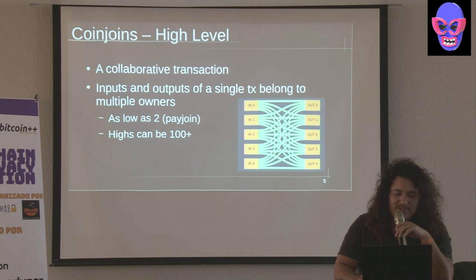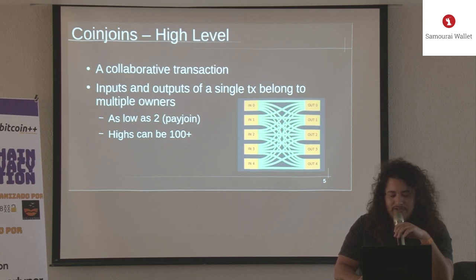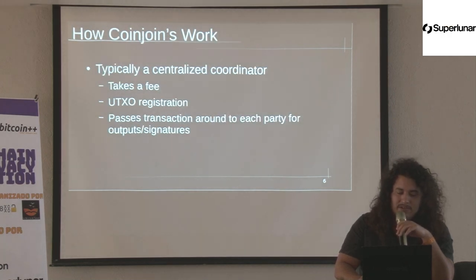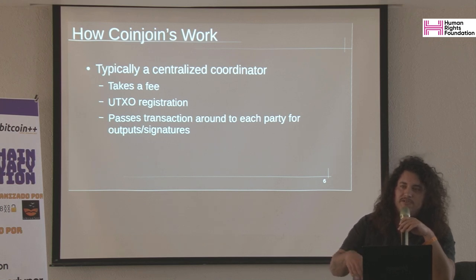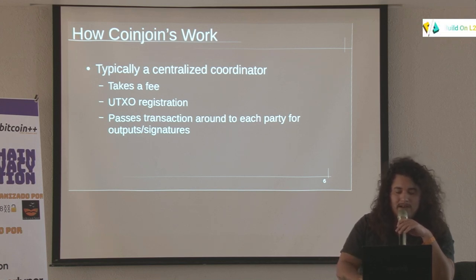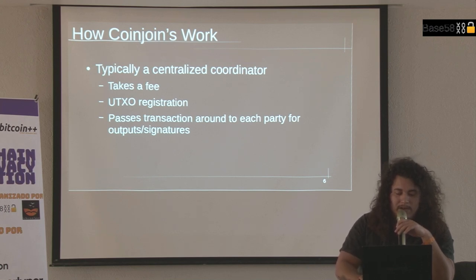It's essentially a collaborative transaction. Ben explained a lot of this in his talk. Many inputs, many outputs — it could be as low as two in a pay join, or as high as hundreds. Wasabi has pushed the limits on collaborative transactions. Typically there's a centralized coordinator involved and they take a fee. There's a UTXO registration phase, and then a transaction phase where everyone's signing and adding outputs. The beautiful property is you can't tell which output was registered based on which input was registered, in most cases.